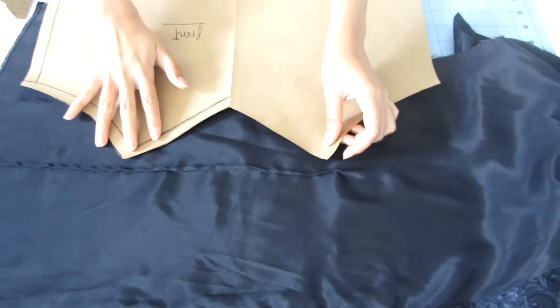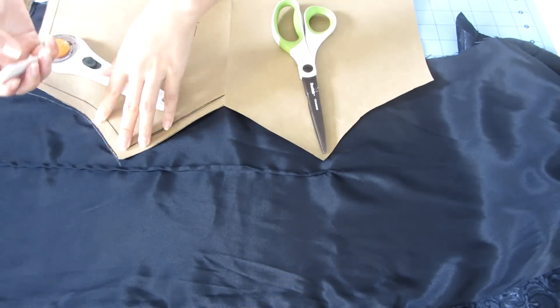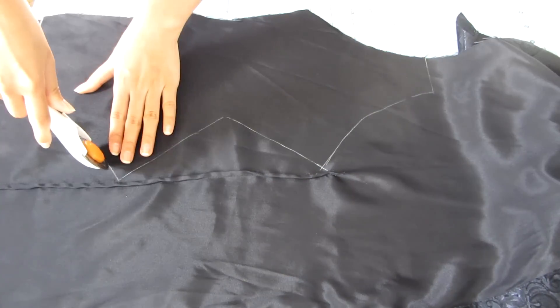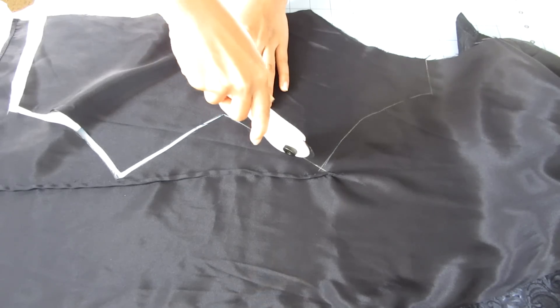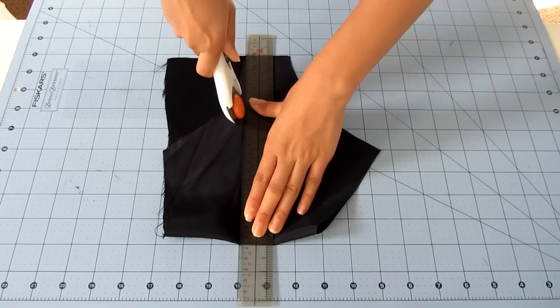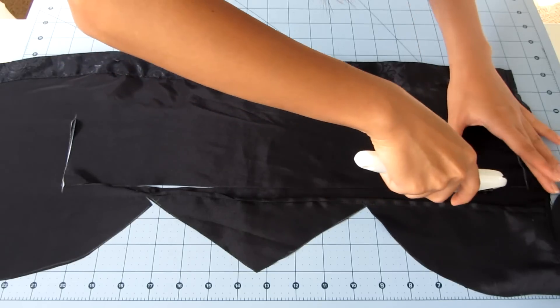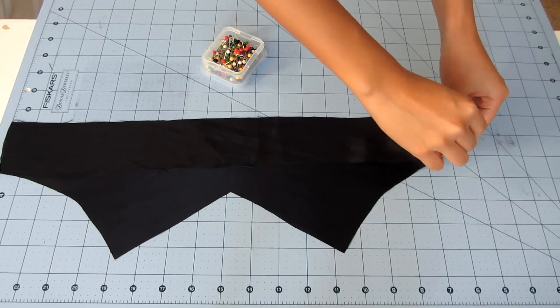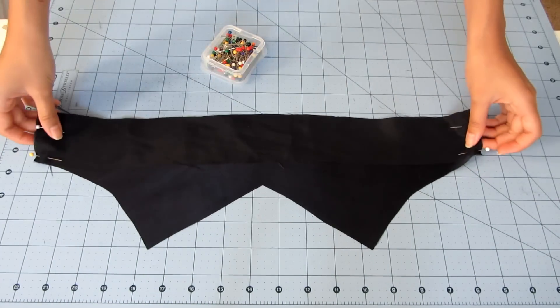I traced the top of the pattern pieces with chalk on the wrong side and then I cut it out. I also cut them down to the height that I wanted for the facing, which was about two inches.